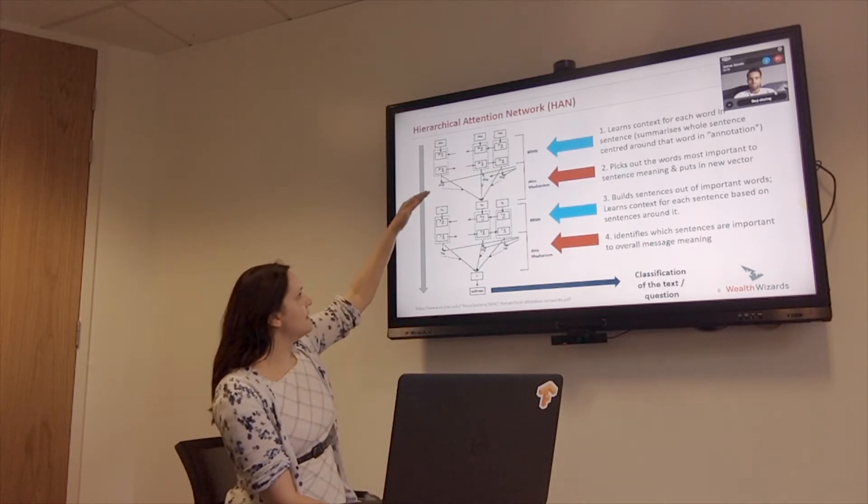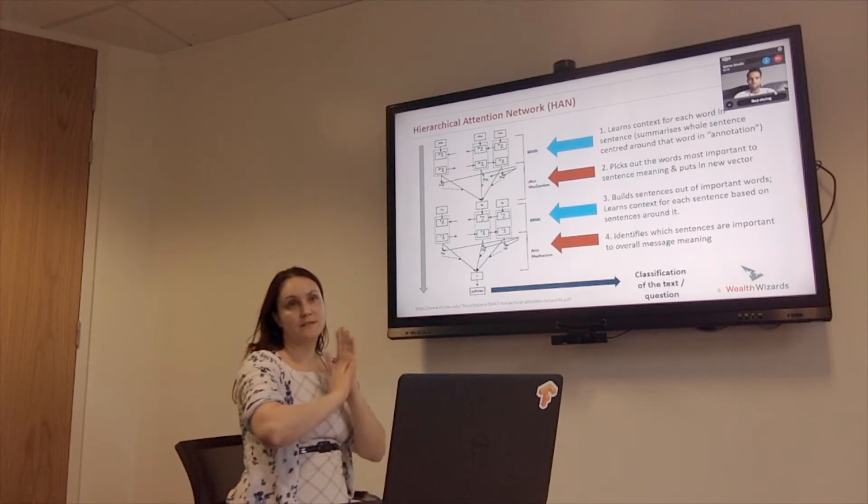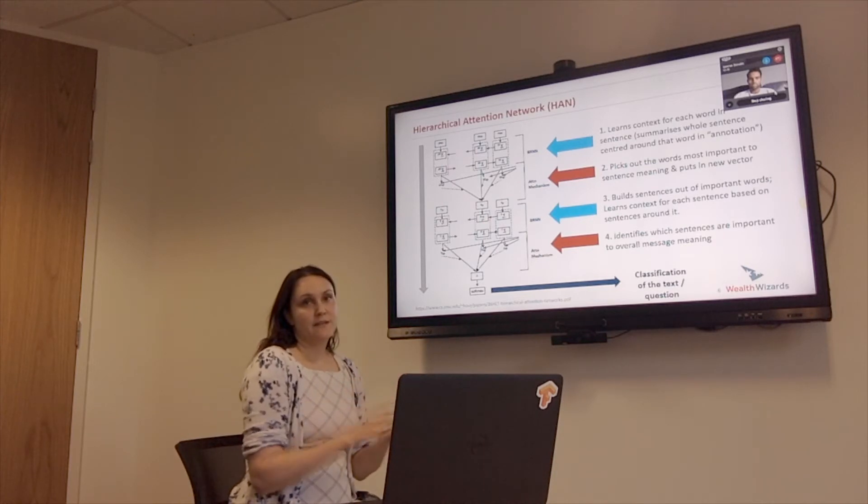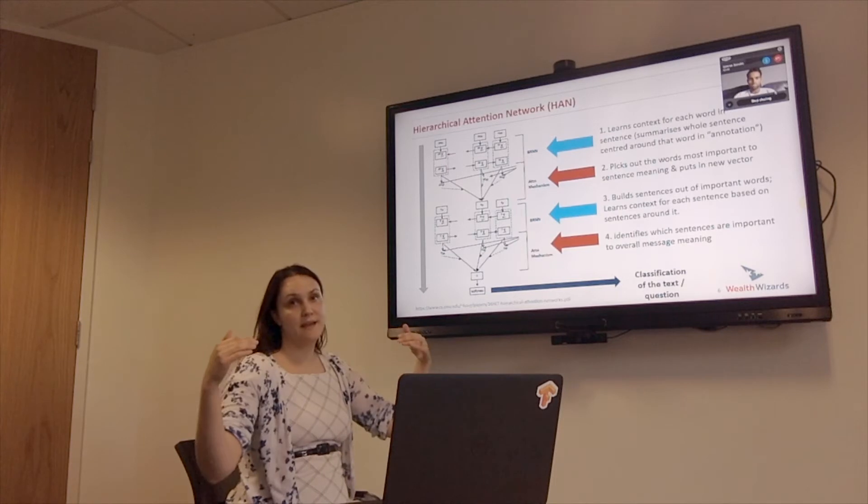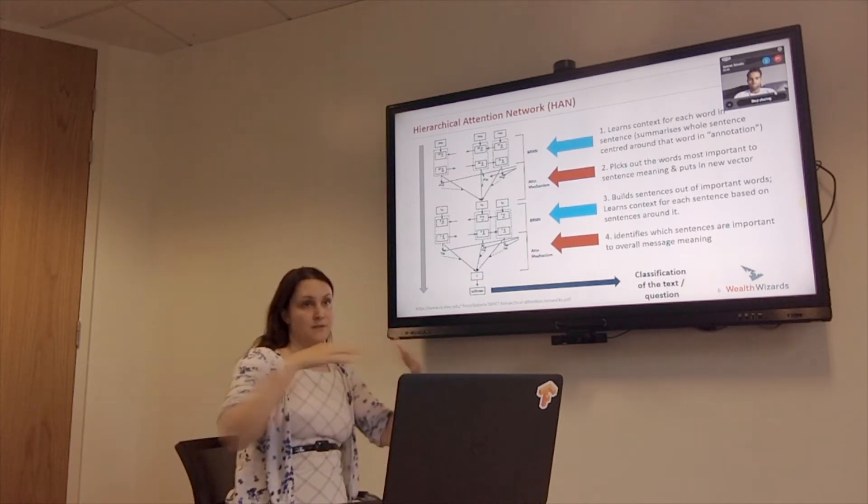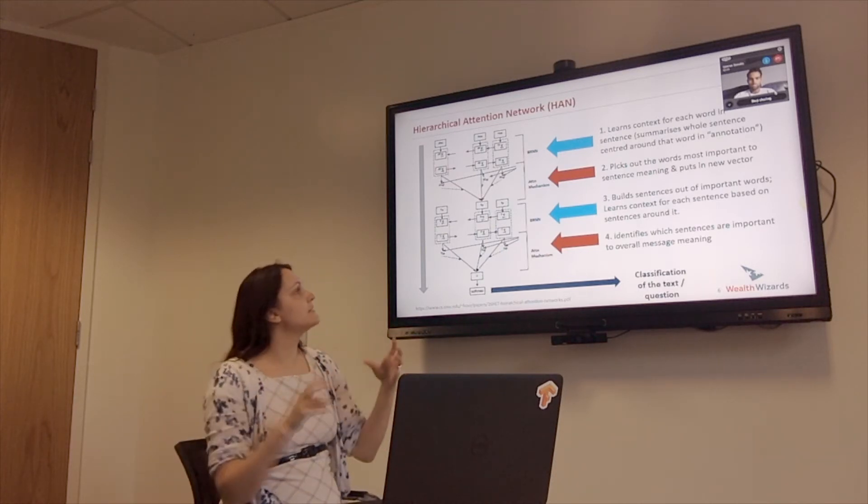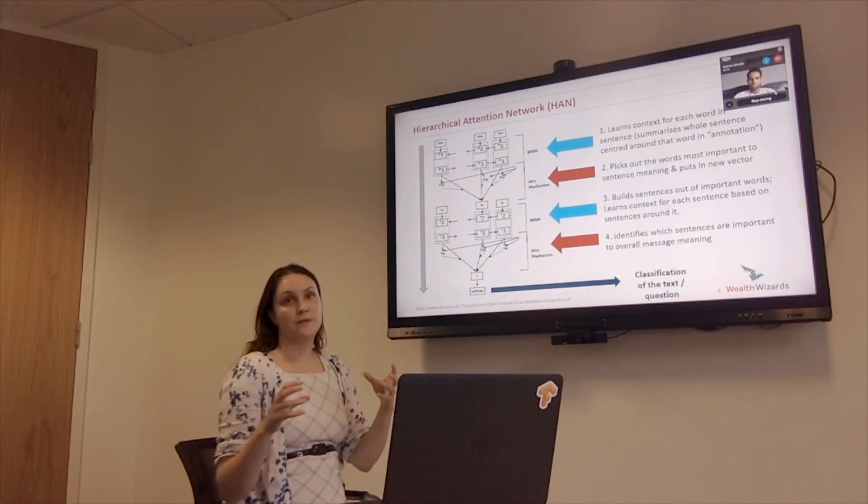So it breaks down each sentence, it'll go through each sentence in turn, it'll break it down into words and turn that into a vector. And then it will use the BRNN to build a context for each word. Where that word is centered, it looks from both directions in that sentence to build a context for it. Then it will look at which ones are most important in that sentence.